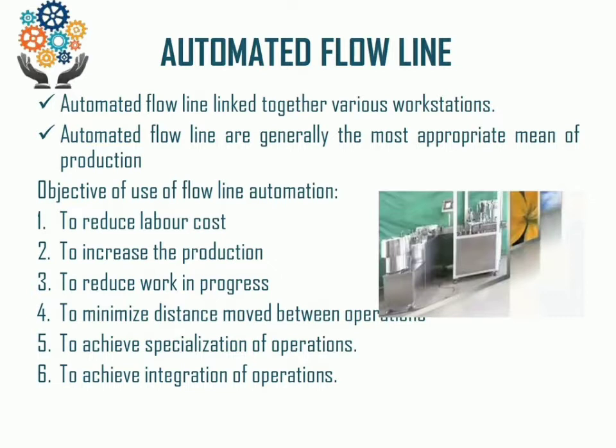Now, what are the different objectives? As labor cost is increasing day by day, laborers are being used to move material from one place to another place. So the first objective of implementing the Automated Flow Line in industry is to reduce the labor cost.